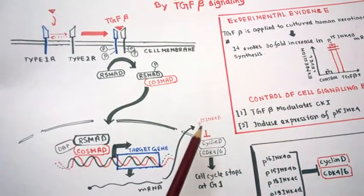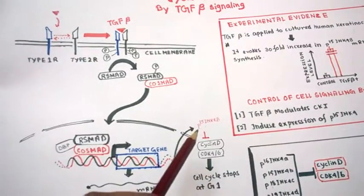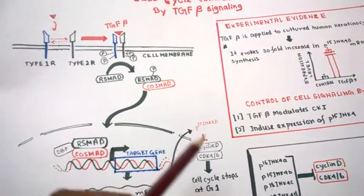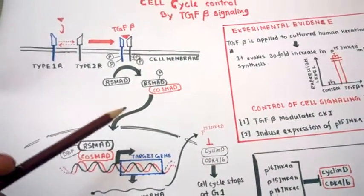P15 is an inhibitor of cyclin D CDK4 complex. It inhibits cyclin D and CDK4, thus inhibiting cell cycle progression and further growth. This is how TGF beta signaling works.